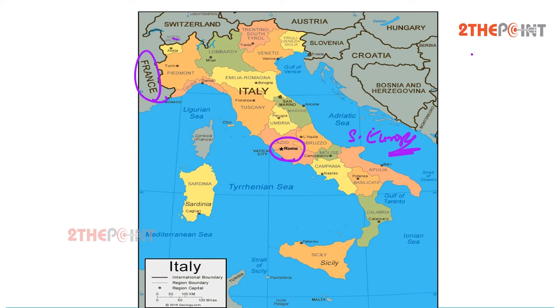To the north, Italy borders France, Switzerland, Austria, and Slovenia. It is roughly delimited by the Alpine watershed, which encloses the Po valley and the Venetian plain.